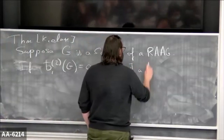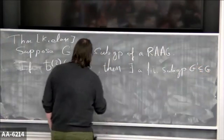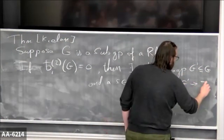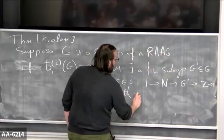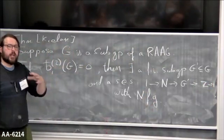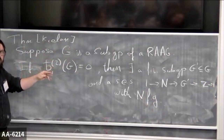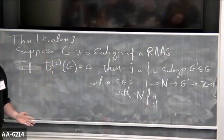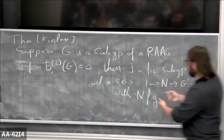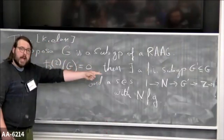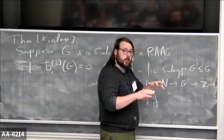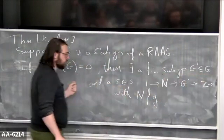...there exists a finite index subgroup G' sitting in G, and a short exact sequence 1 → N → G' → Z → 1 with N finitely generated. So the first L² Betti number vanishes and you have this assumption of being a RAAG subgroup. In David's paper he says 'virtually RFRS' — but fortunately somebody else defined RAAG and I don't want to define RFRS. You get this virtual fibering. So this is the other direction: if I have such a short exact sequence, the other theorem tells me the first L² Betti number vanishes; and David is proving a converse — if you have vanishing, you get this lovely short exact sequence.